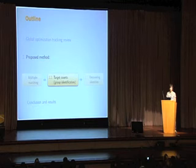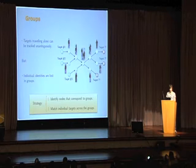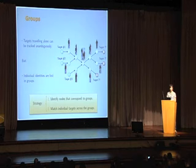I'll now motivate the second and third stages of the system. As you can see, targets traveling alone can be tracked without any ambiguity, but as soon as they merge into a group, they lose their individual identities. The strategy is to first identify the nodes that correspond to groups — which is the second stage — and then match individual targets across the groups, which is the third stage.